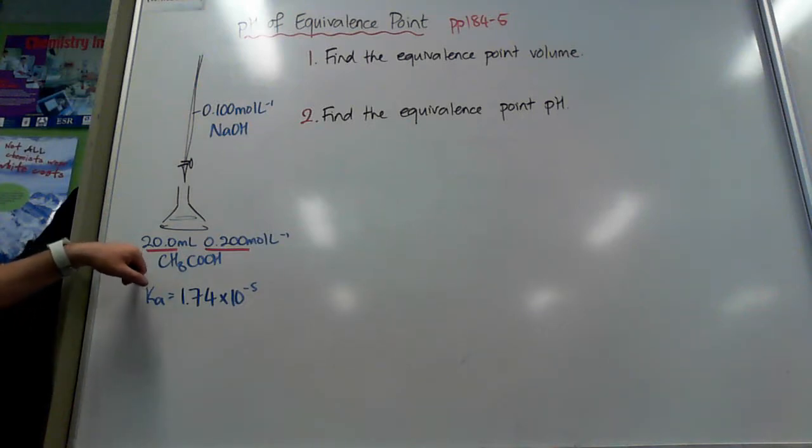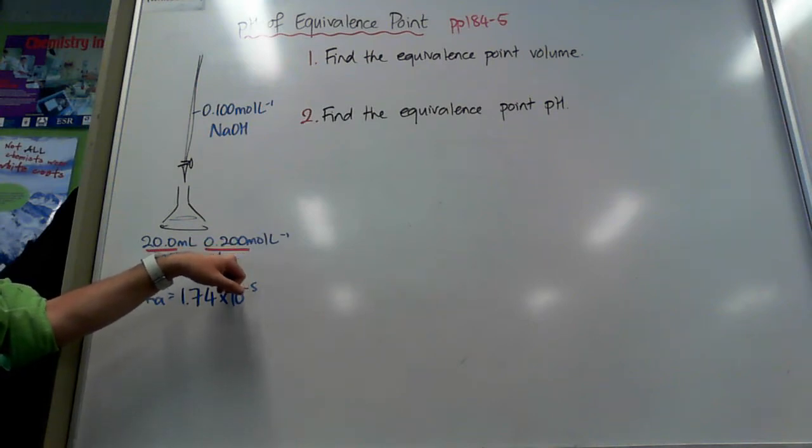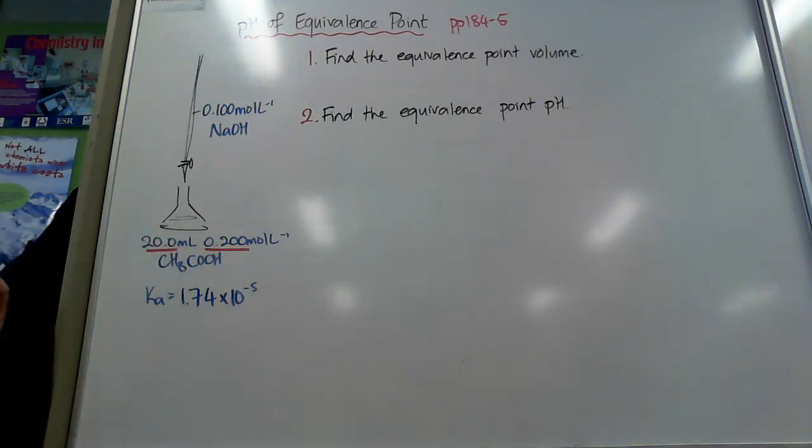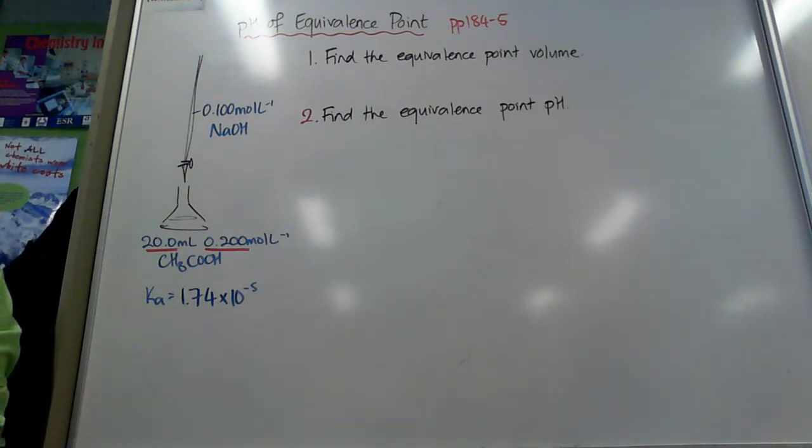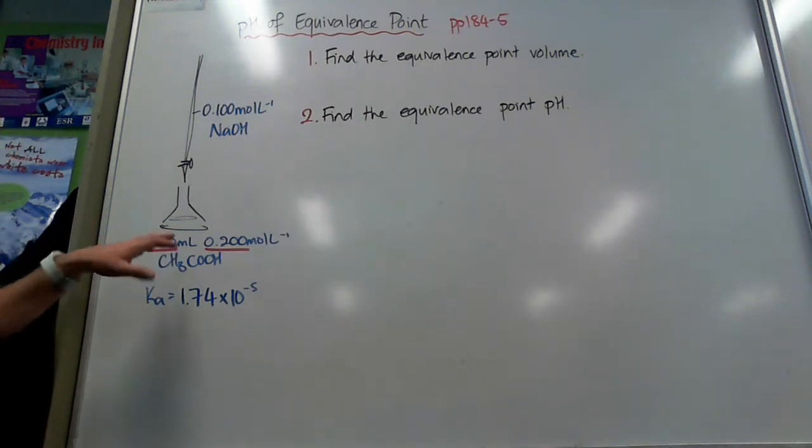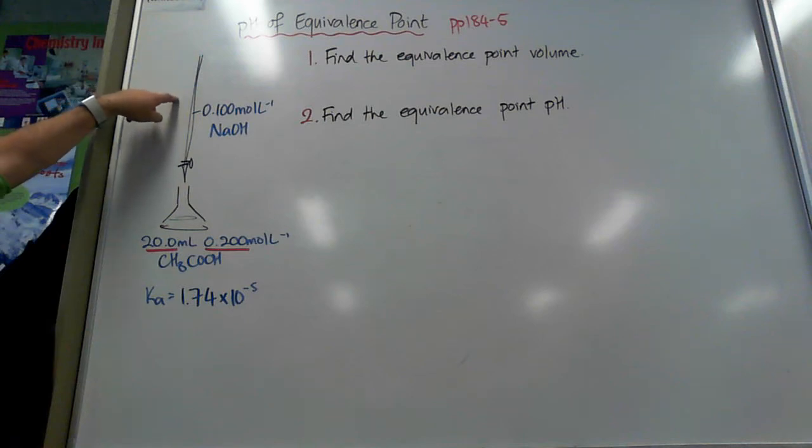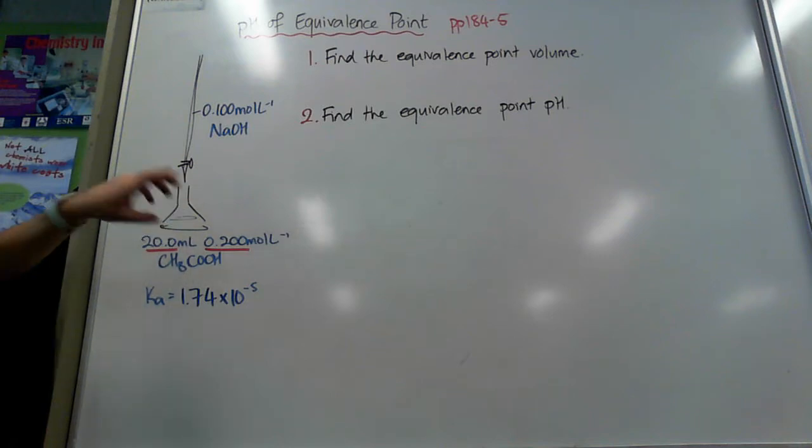So 20 over 1,000 to get it into litres, times 0.2 will give me 4 times 10 to the negative 2 moles of ethanoic acid. So in this Erlenmeyer flask I've got 0.04 moles of ethanoic acid.